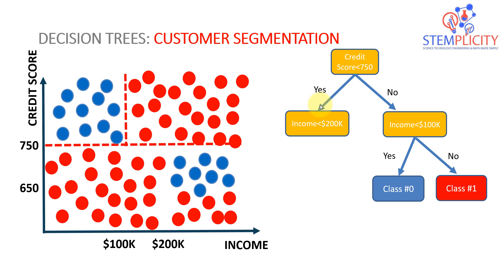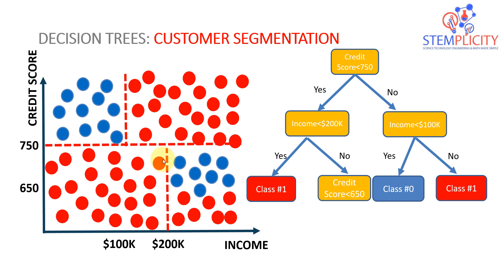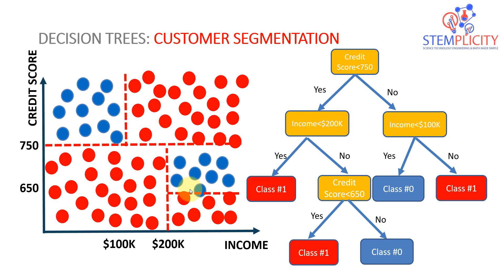If credit score is less than 750, we're in this region. Is your income less than 200,000? If yes, you belong to class one. If no, we have additional questions — you ask: is your credit score less than 650? If yes, you're class one. If no, you belong to a small portion that is class zero. The overall concept is that within a specific division you can have more divisions — three, four, or ten classes.